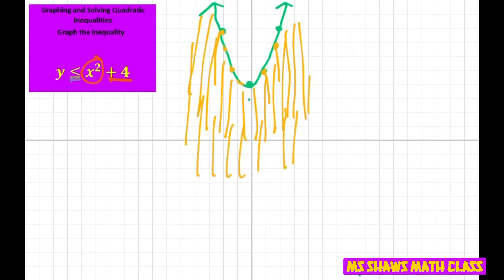Another way to do this is to check points. So we could check, let's see, 0, 5 and see if that's true. So is 5 less than or equal to 0 squared plus 4? And 5 is not less than or equal to 4. So this point wouldn't work.